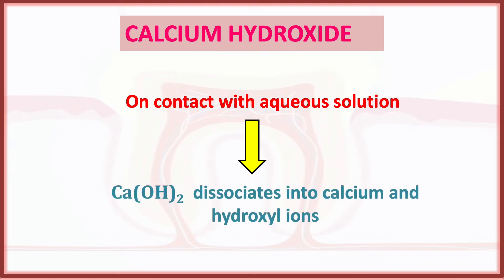Although calcium hydroxide dissociates on contact with aqueous solution, it has low solubility in water because of its larger molecular weight. This property is very important — its larger molecular weight and low solubility allow it to stay in the canal for a longer period and release calcium and hydroxyl ions gradually.